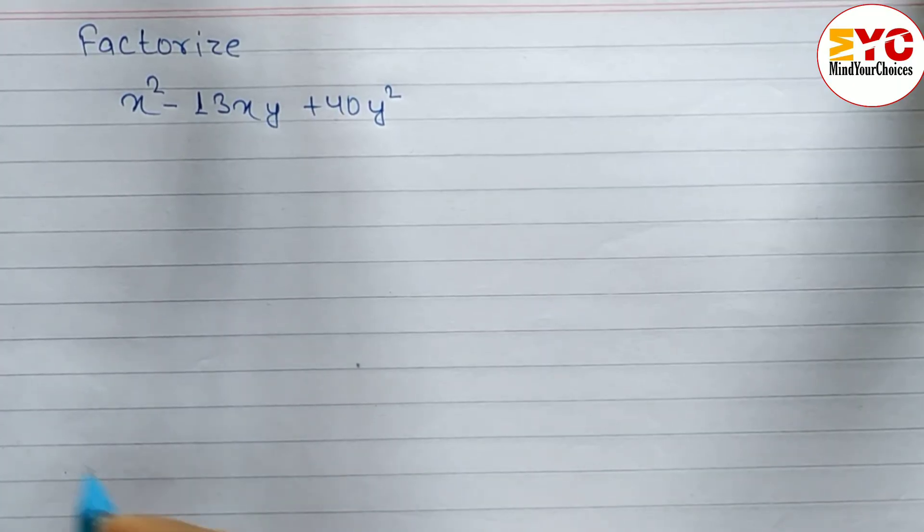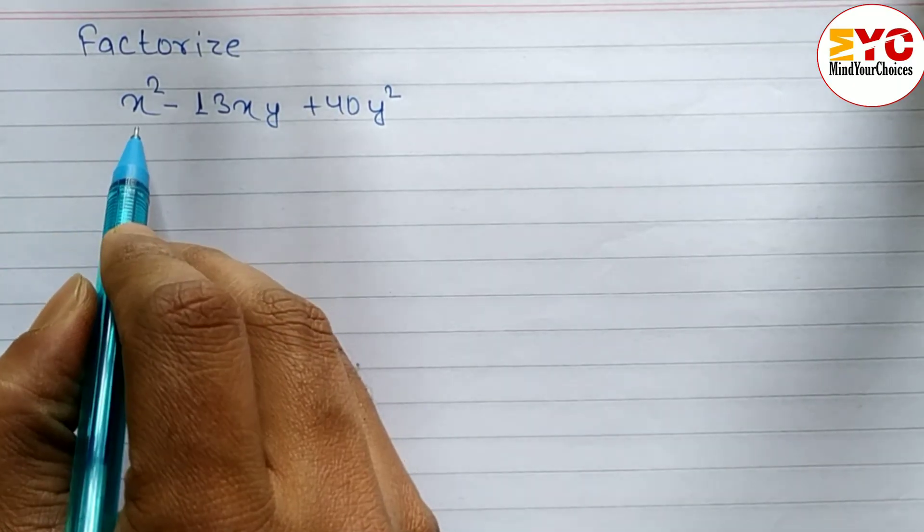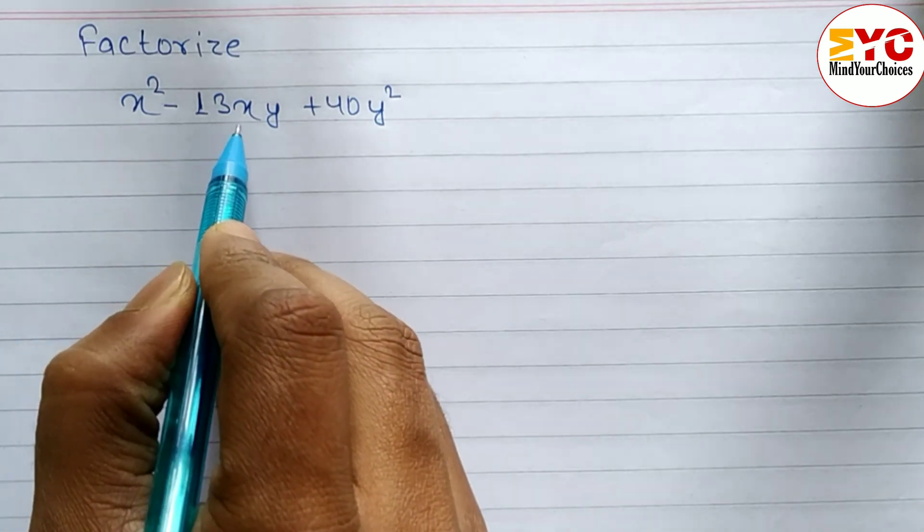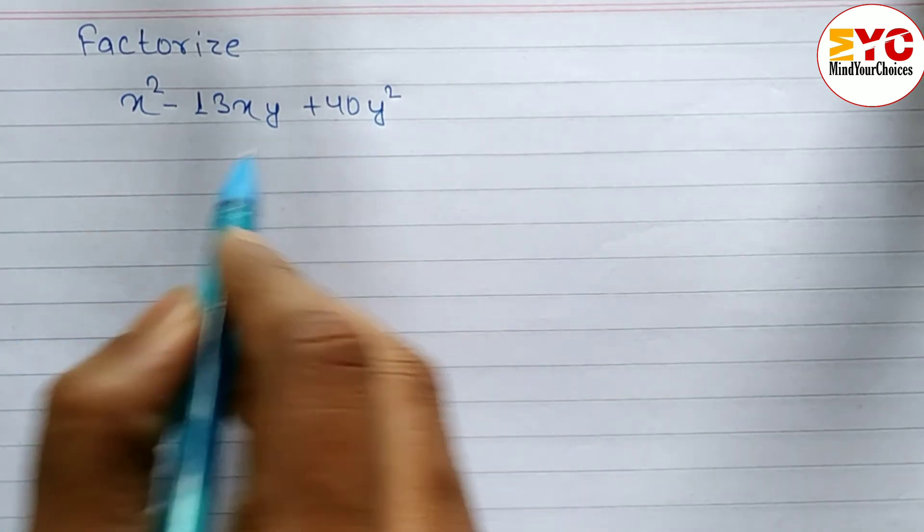In this video we will learn how to factorize a quadratic equation. Here we have the question: x square minus 13xy plus 40y square equals 0.